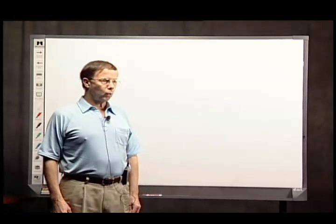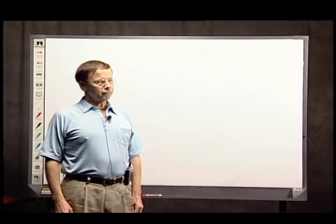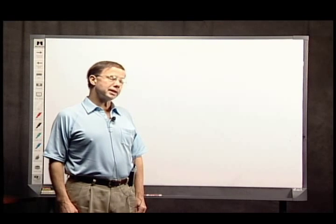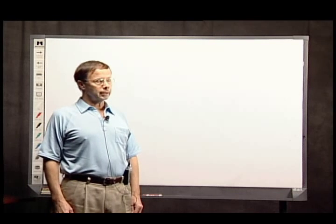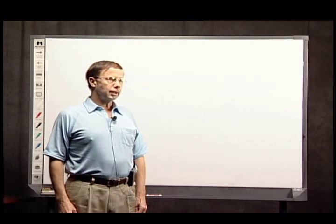There are two sheets of paper that you should have in front of you as you view this recording. One is a list of all the problems that I'll be working, on the back of which are the answers to those problems. The second includes a fairly detailed set of steps in the solution of these problems. Having this sheet in front of you will make it unnecessary for you to take voluminous notes. These sheets are available in the Academic Support Center, room N19.